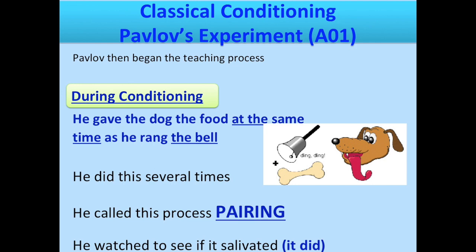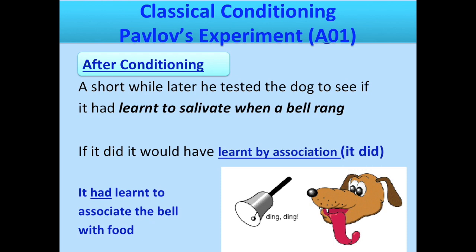The dog salivated during conditioning because the food was present. After conditioning, Pavlov tested the dogs by ringing the bell with no food present — and the dog salivated. The dogs had learned to salivate to the sound of a bell. They had learned by association that when a bell rings, food will be present, and they had the physiological response of salivating to the bell.